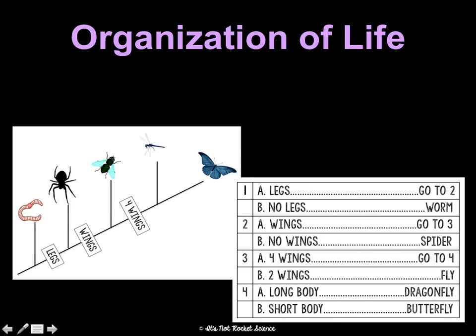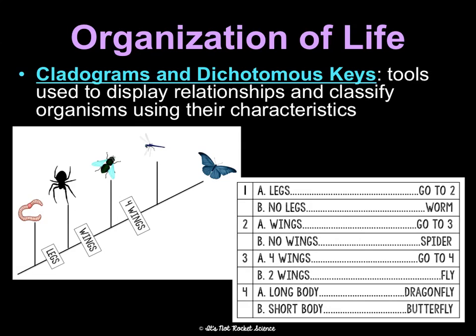We have some tools to help organize life and understand how things are related: cladograms and dichotomous keys. They display relationships and help us classify organisms based on their characteristics. In this cladogram, everything from a certain point has legs, everything from a further point has wings, and more specifically some have four wings. We can also use dichotomous keys — take any organism and run it through the key to identify what it is, always starting at number one.